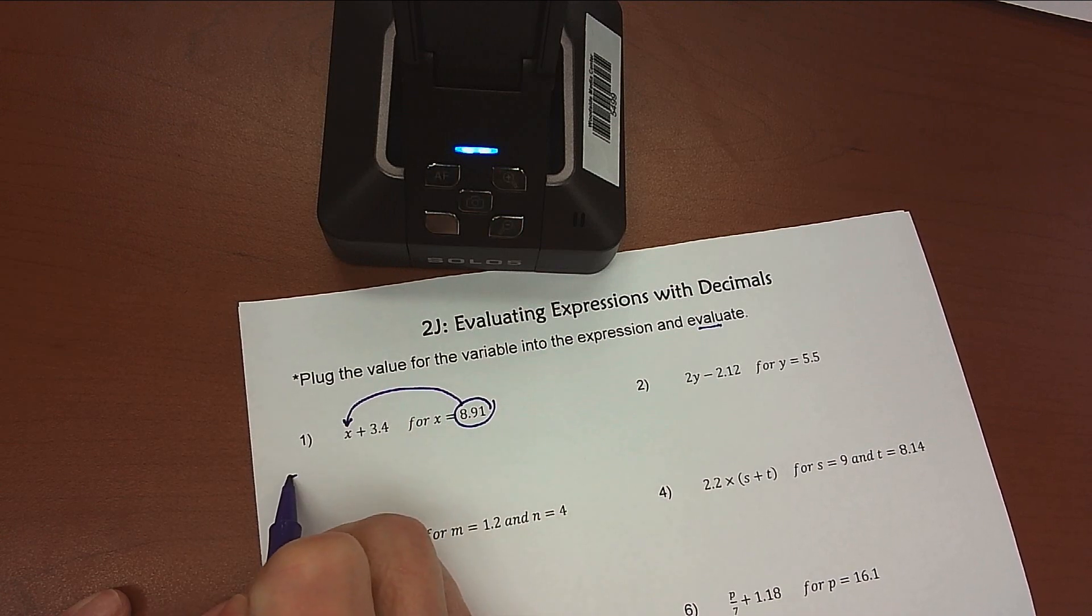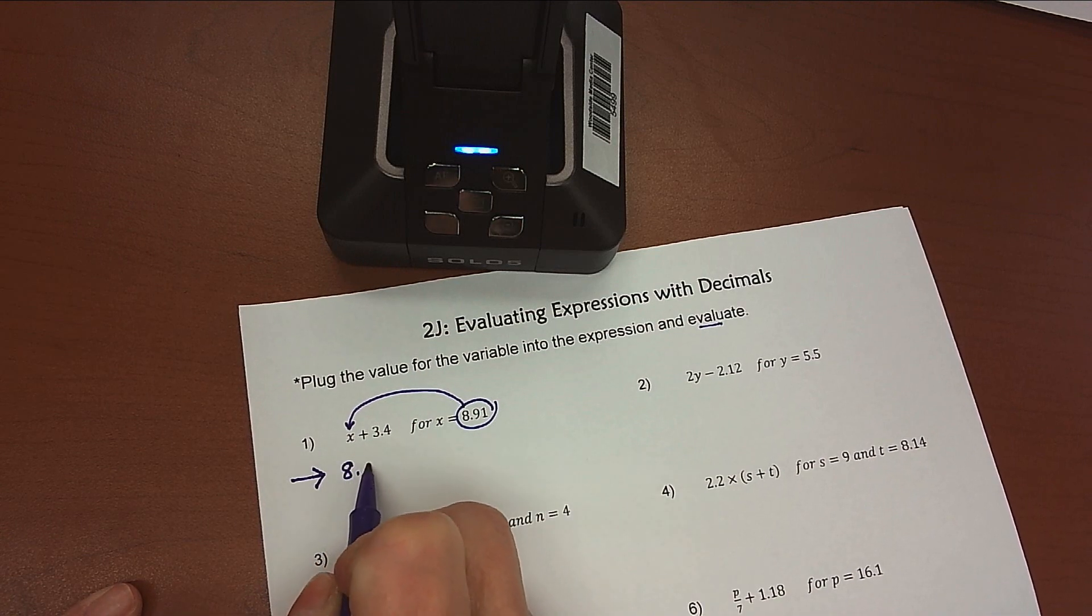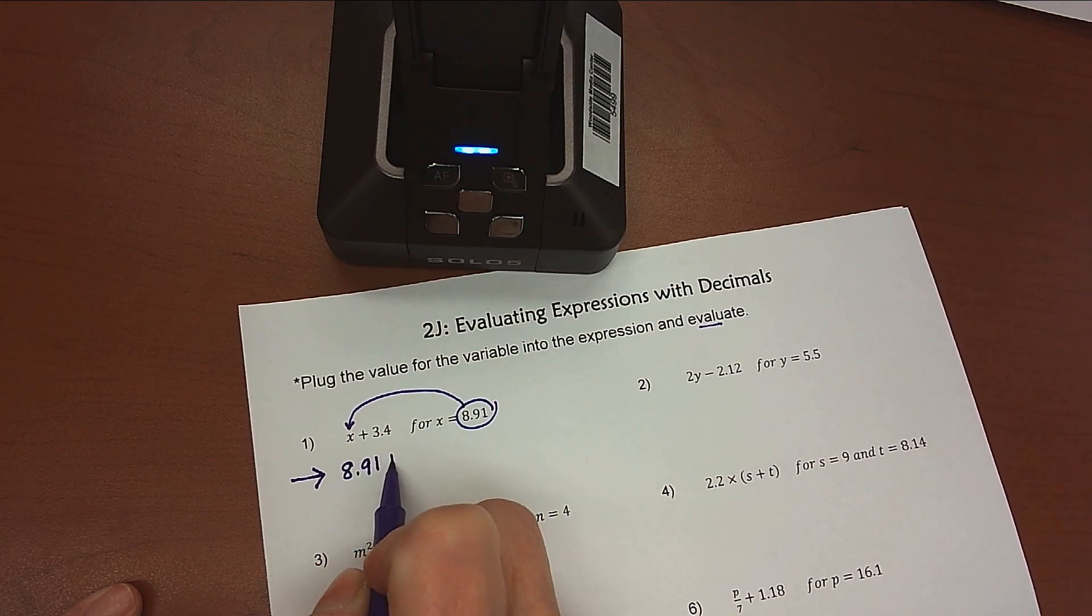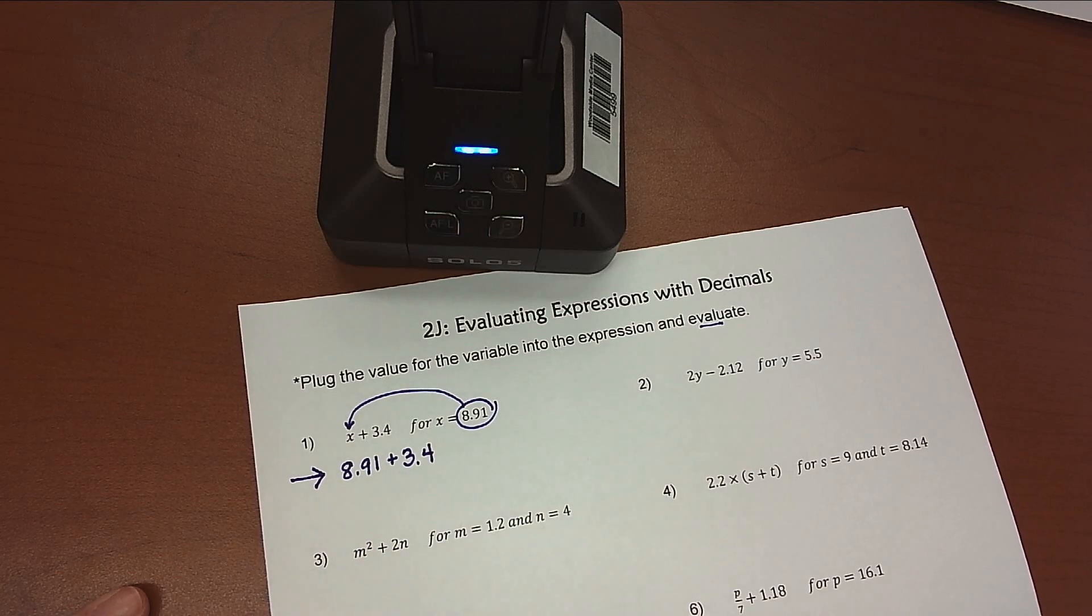Now, in order to get full credit for my problems, I have to show that substitution. So my first step is to take the 8.91 and rewrite this problem, taking the x out and putting the 8.91 in.